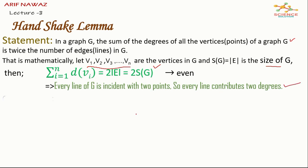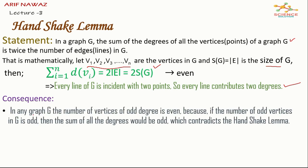Here consequence is in any graph g the number of vertices of odd degree is even because if the number of odd vertices in g is odd then the sum of all the degrees would be odd, which contradicts the handshake lemma. So every cubic graph has an even number of vertices.